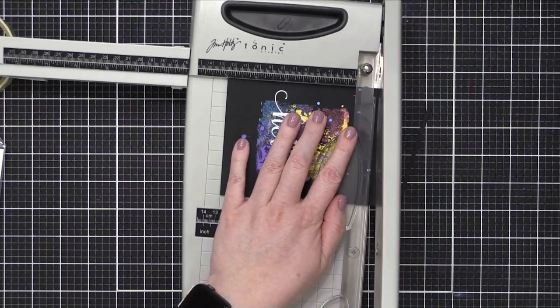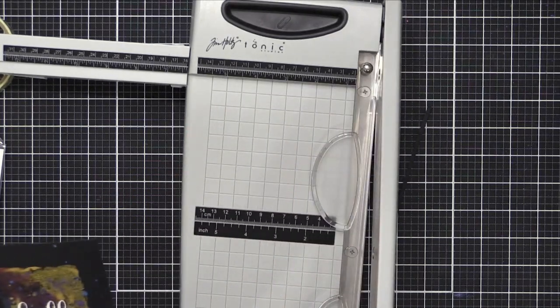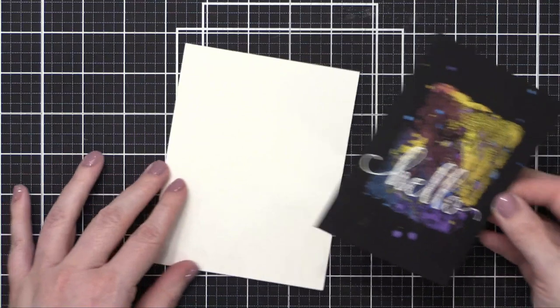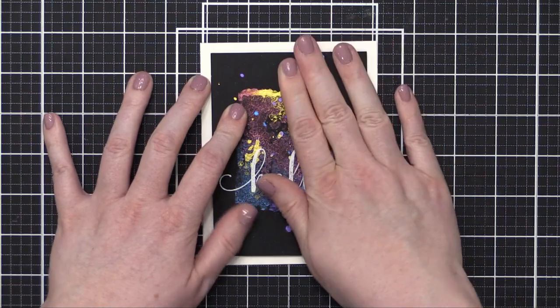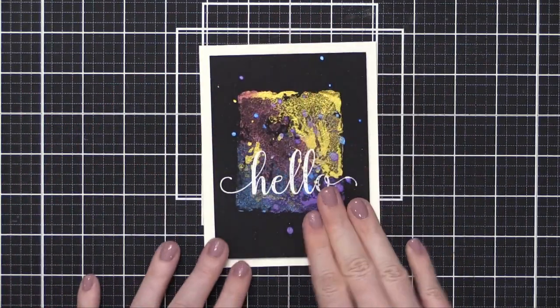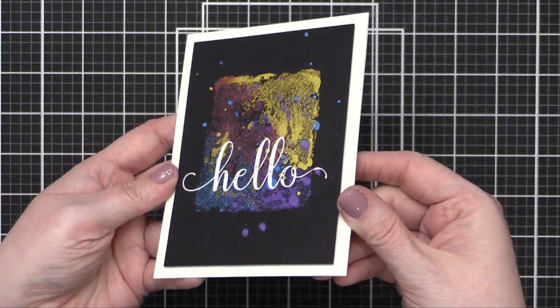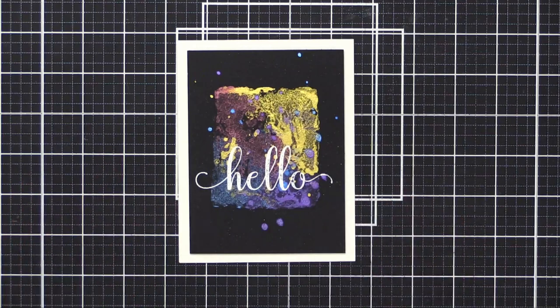And then I trimmed it down so that it was three and three quarters wide by five tall so that I can put it on an A2 card and have the white edge showing. I put the foam adhesive on the back of my watercolor panel, and then adhered it to a white note card made out of some Neenah Classic Crest Solar White 110 pound cardstock. And that is the card. Look at the shine and shimmer on that. I think it turned out so beautifully.